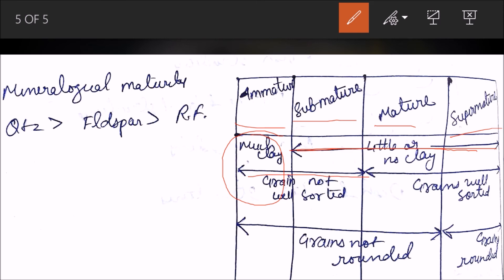In terms of sorting, grains not well sorted can lie in the category of immature to submature. Grains well sorted lie in the category of mature to supermature. In terms of roundness, if grains are not well rounded, they can lie in immature, submature, and mature zone. But if grains are well rounded, it is said to be supermature.